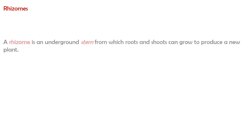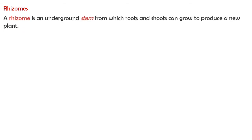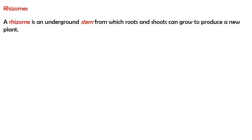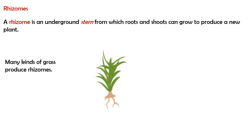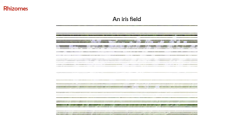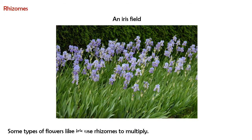A rhizome is an underground stem from which roots and shoots can grow to produce a new plant. Many kinds of grass produce rhizomes. Some types of flowers, like iris, use rhizomes to multiply.